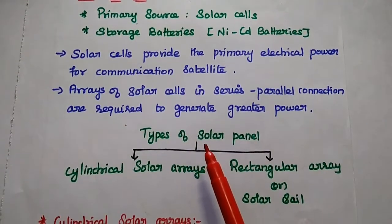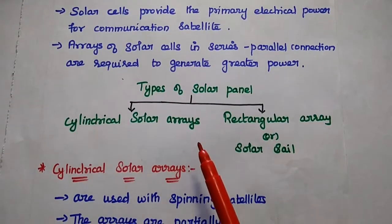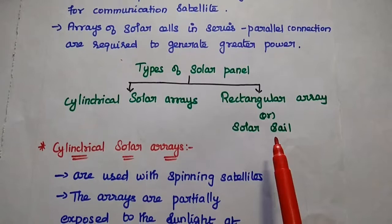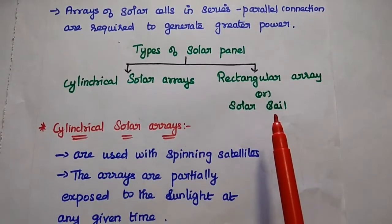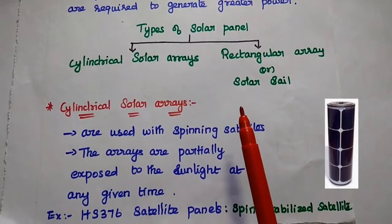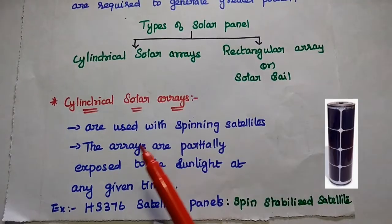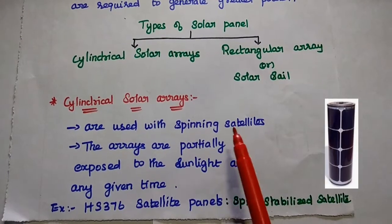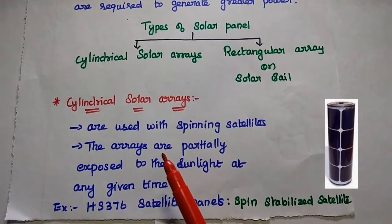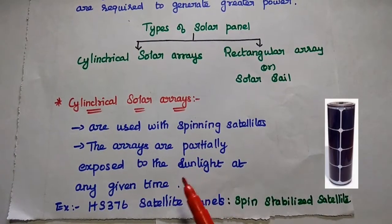Based on the shape, we can have two types of solar panel: one is cylindrical solar arrays, and the next one is rectangular arrays. In cylindrical solar arrays, the solar cells are arranged in cylindrical form. These solar arrays are used with spinning satellites. Since the shape is cylindrical, the arrays are only partially exposed to sunlight at any given time.